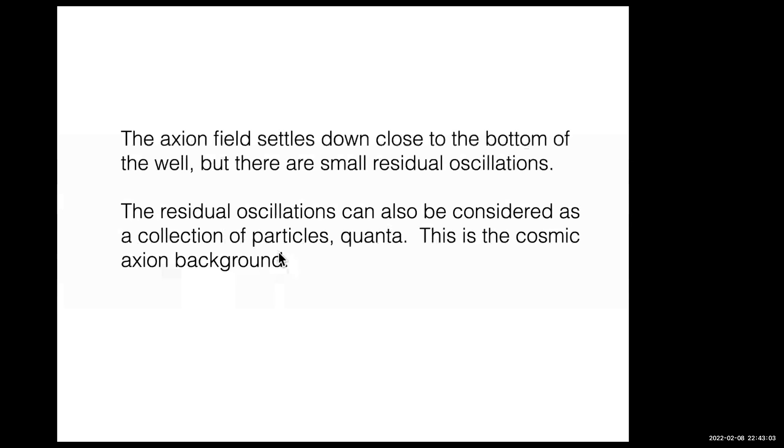You can analyze these oscillations using the interpretation of fields as quanta, just like electromagnetic fields are made out of photons. These residual oscillations produce collections of particles, and that's exactly the cosmic axion background. It turns out that if you follow through the big bang cosmology of this settling down of the field to its minimum and the residual oscillations, they correspond to a residual mass density that's roughly proportional to F.